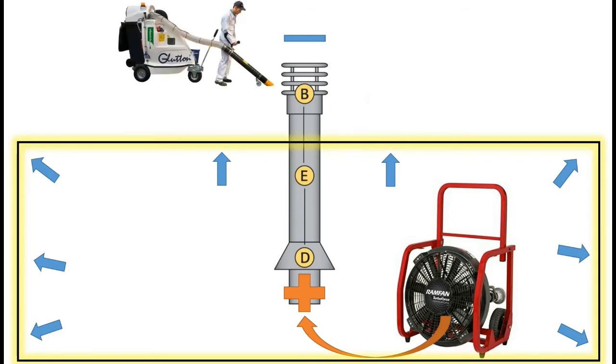If you imagine negative pressure as being a vacuum cleaner sucking air out of the flue. When everything is set up like this, the flue will work correctly because there's less pressure at the terminal than there is at the appliance at the base of the flue.